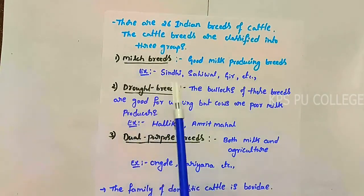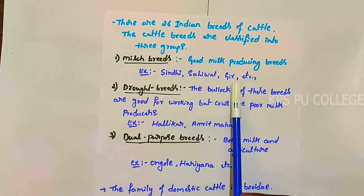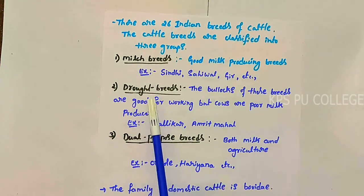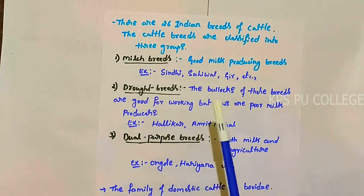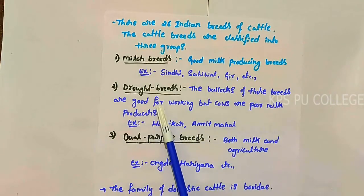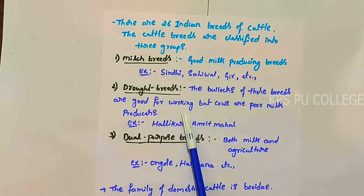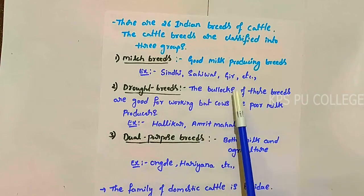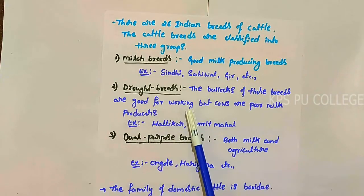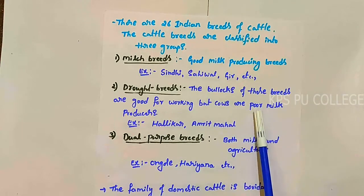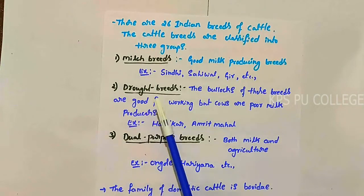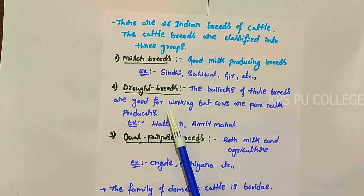Examples of milk breeds are Sindhi, Sawal, and Gir. The second group is draught breeds. Draught breeds are those whose bullocks are good for working purposes. However, the cows of these breeds are poor milk producers.